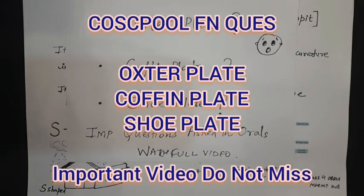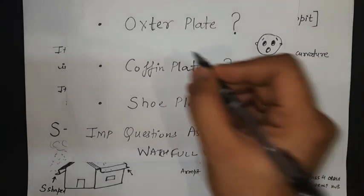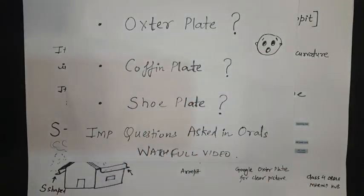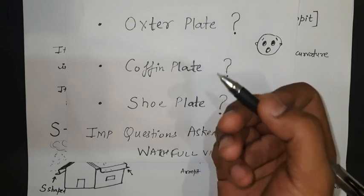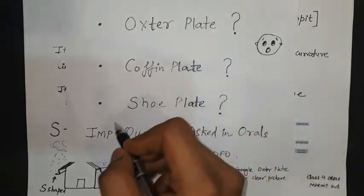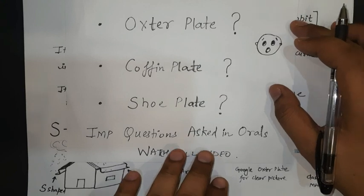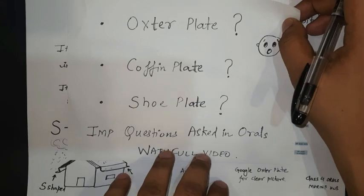Hello guys, welcome back to the Class 4 Orals Marine Hub YouTube channel. In MMD orals, in the safety or the coast pool function, the surveyor usually asks about the oxter plate, coffin plate and the shoe plate to the candidates. But majority of the candidates do not know what is the definition or what is the location of these plates. So in this video, please watch till the end because we are explaining in a very beautiful manner about all the three plates.